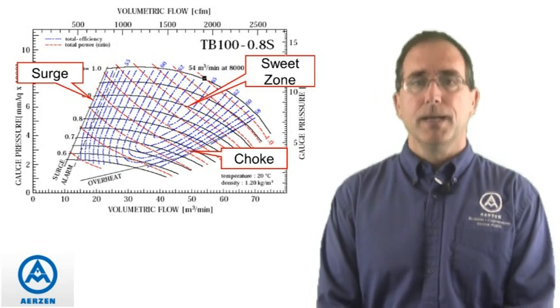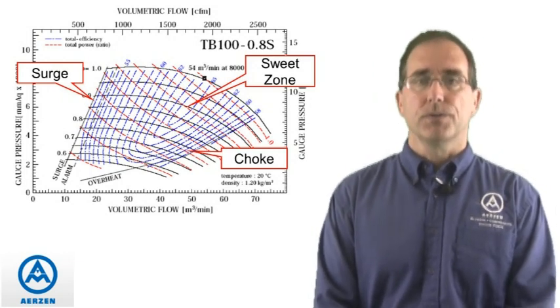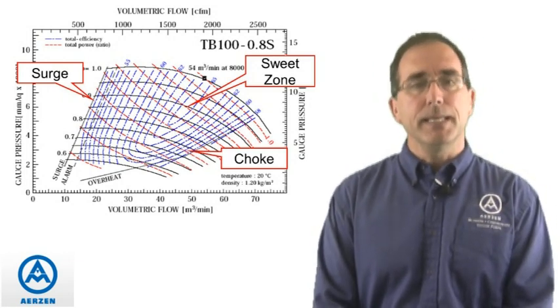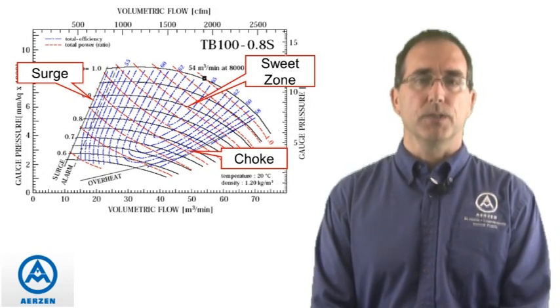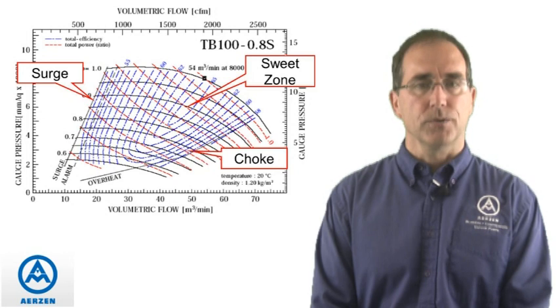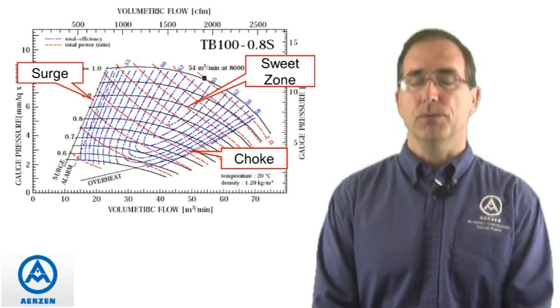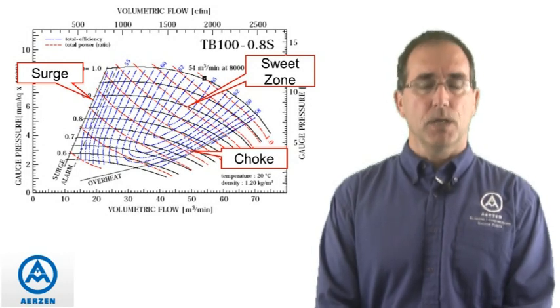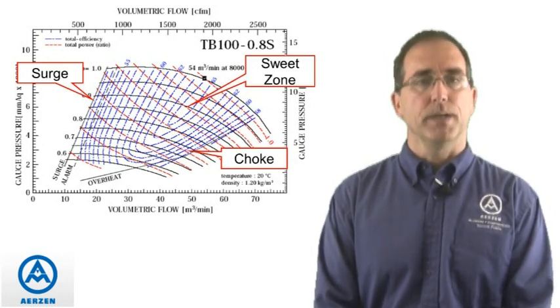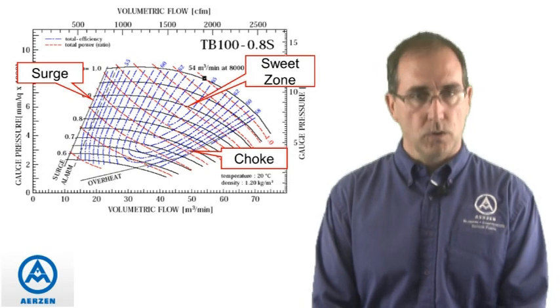Then there's the area of choke and the area of surge. Surge is probably the most critical area of a centrifugal blower, because if you're running on a constant pressure line, which is typical in a wastewater treatment plant, the turndown is affected by the blower running into that surge point, and you want to avoid that at all costs.